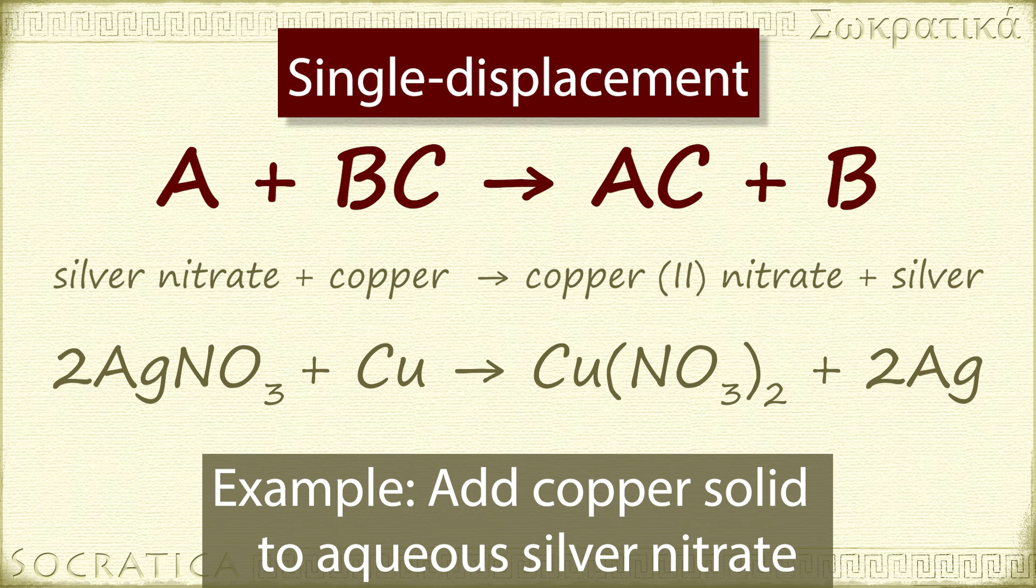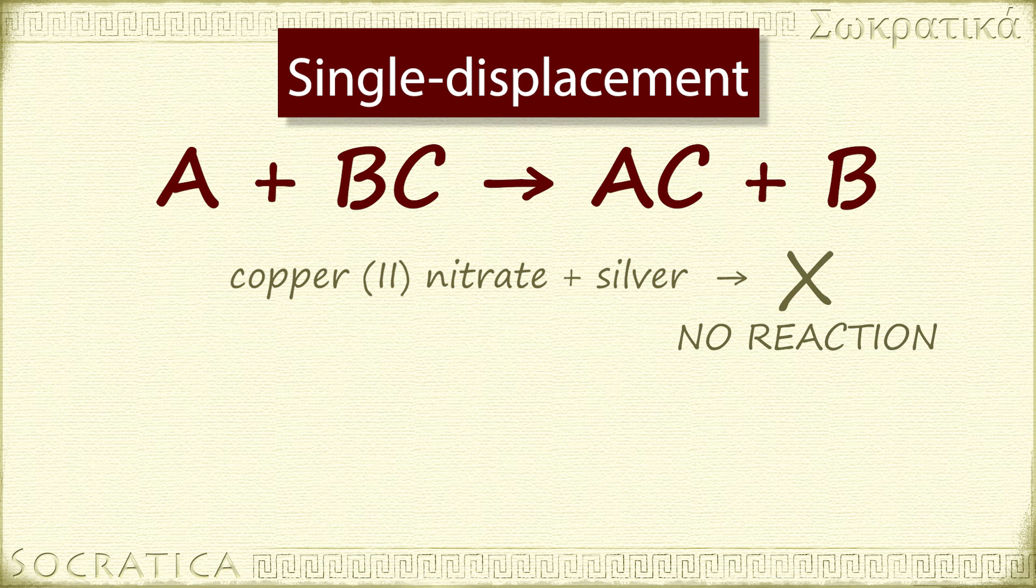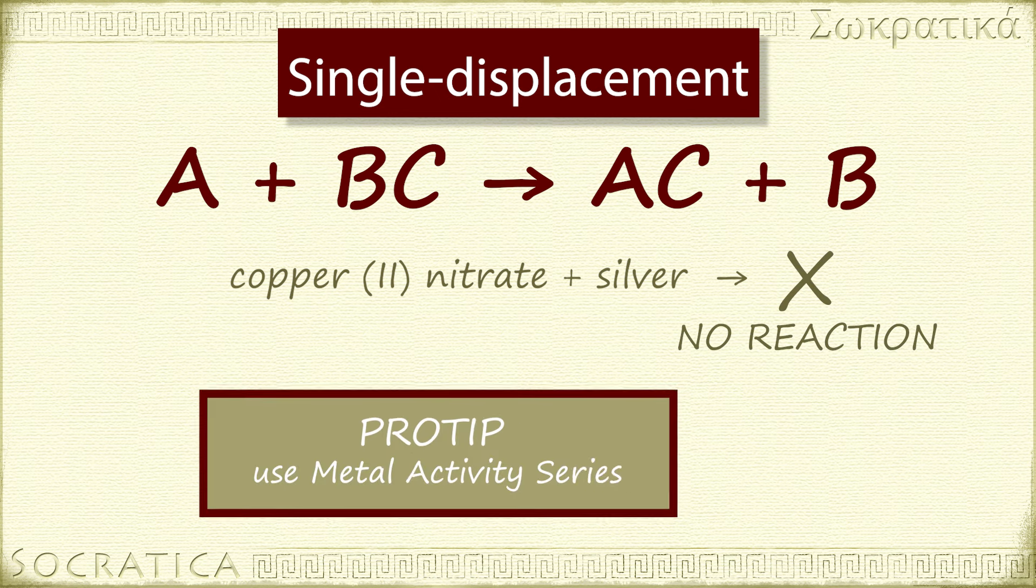But how do you know that they will do that? What if we started with a copper nitrate solution and stuck in a bar of silver? Would the swapping still take place? No. No reaction. We use a metal activity series table to predict whether one metal will displace another.